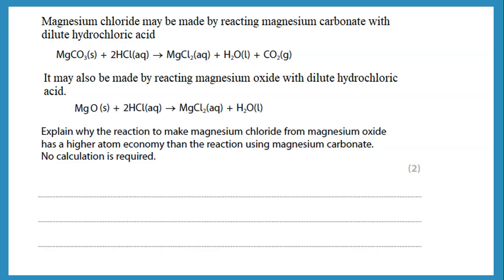This question says magnesium chloride may be made by reacting magnesium carbonate with dilute hydrochloric acid. We have two different reactions making magnesium chloride — either from magnesium carbonate, or it may also be made by reacting magnesium oxide with dilute hydrochloric acid. The question is: explain why the reaction to make magnesium chloride from magnesium oxide would have a higher atom economy than the reaction using magnesium carbonate.